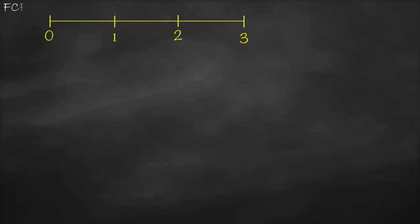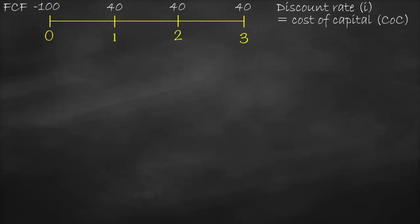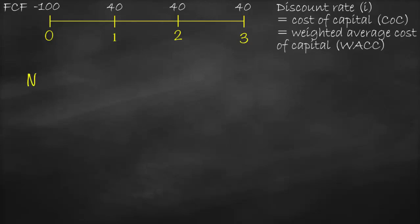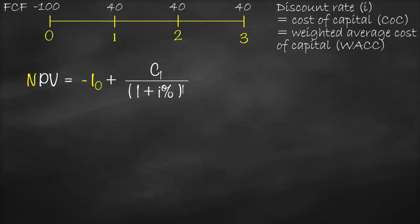Let's assume that we have a project that will last for three years. Our initial investment is 100 million and our free cash flow will be 40 million at the end of each year for the next three years. We know that our discount rate is i, which is the same as cost of capital, which is the same as weighted average cost of capital (WACC). We know that our net present value formula is: negative initial investment plus our cash flow in year one divided by one plus interest rate to the power one.